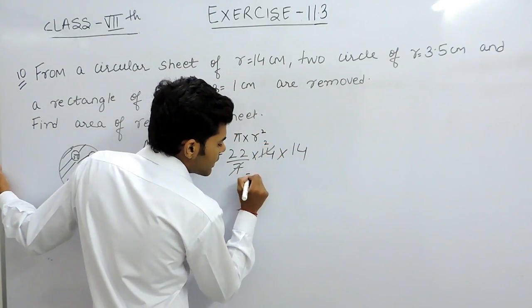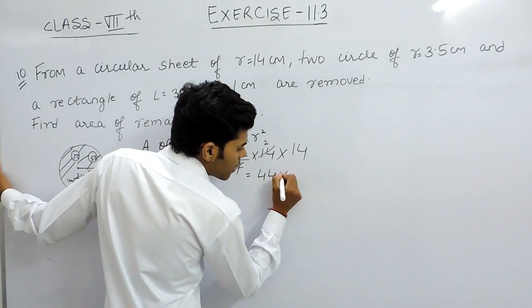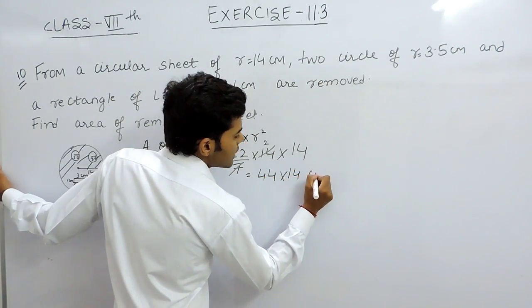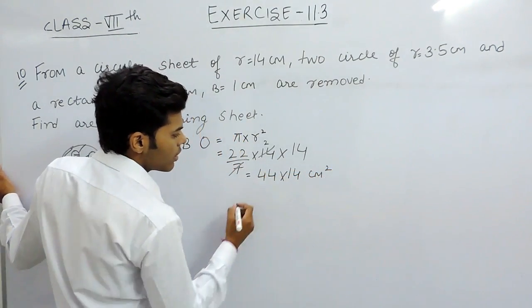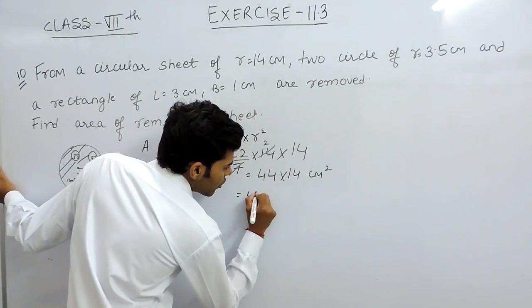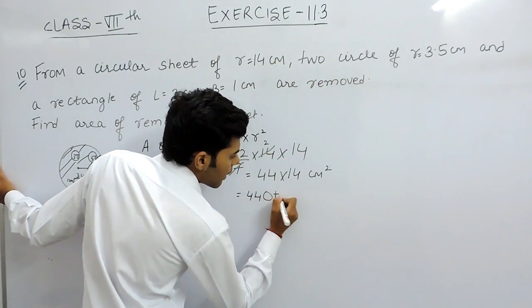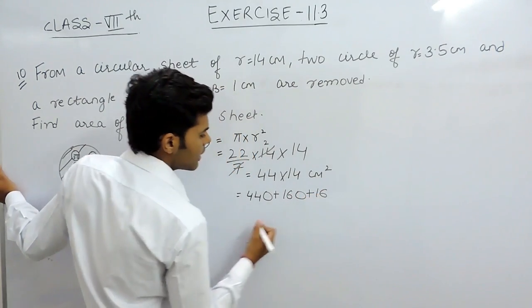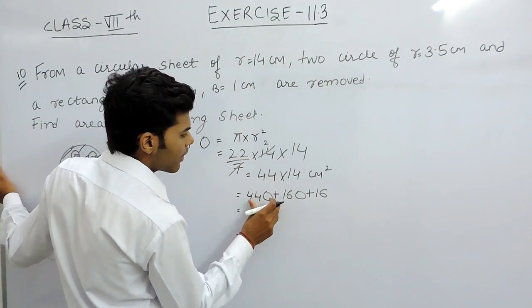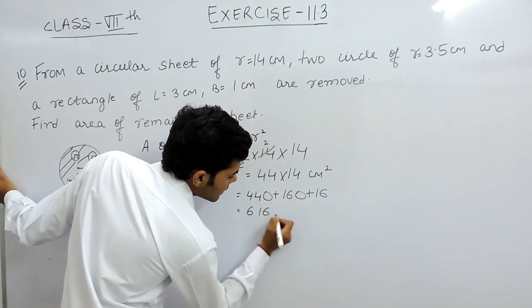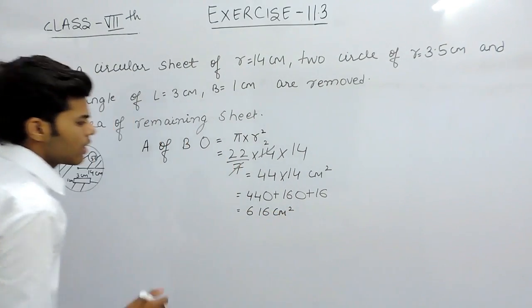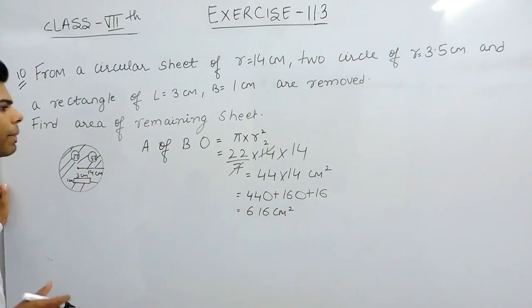7 times 14 will be equal to 44 multiplied with 14 cm². That will be equal to 440 plus 160 plus 16, which is 616 cm². This is the area of the bigger circle.